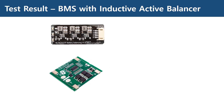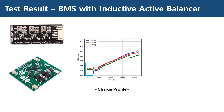This is the result for the inductive active balancer. As you can see in this graph, the voltage of cell 1 is slightly lower than the other two. As soon as I connected the active balancer, the balancing was activated and the charge of cell 2 is transferred to cell 1 to achieve balancing. The overall charge result was not satisfactory — the cells were not balanced after charging was complete, but the voltage fluctuations show that the balancer did at least try to balance the cells.